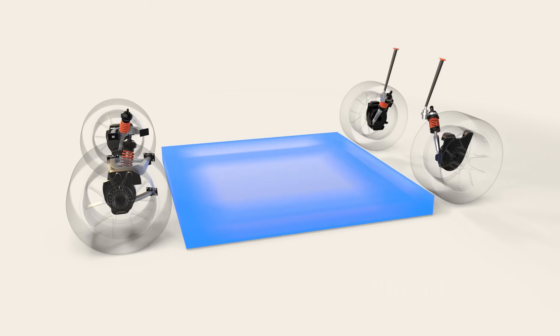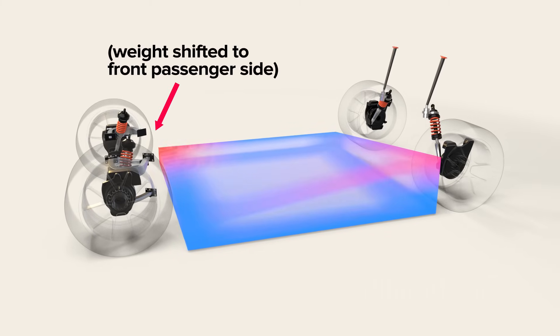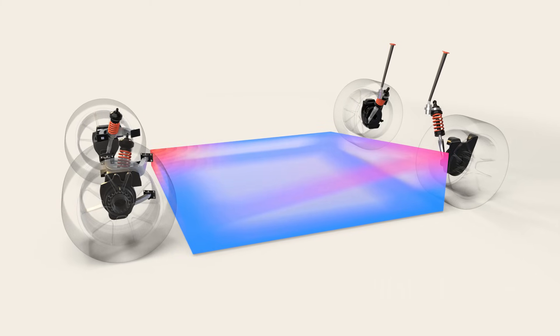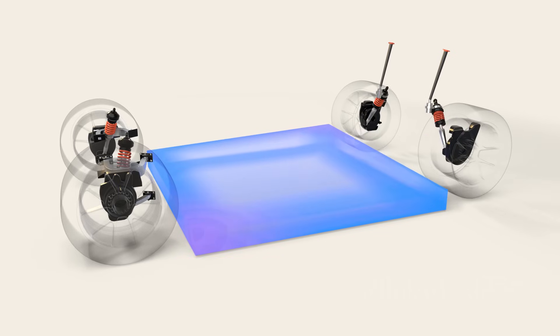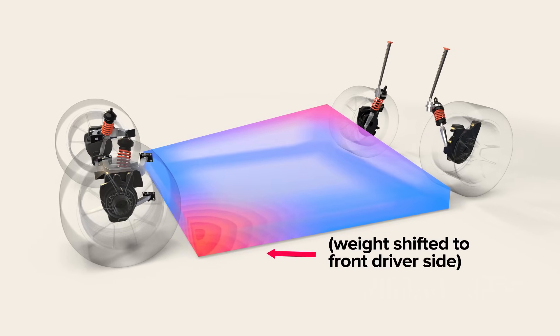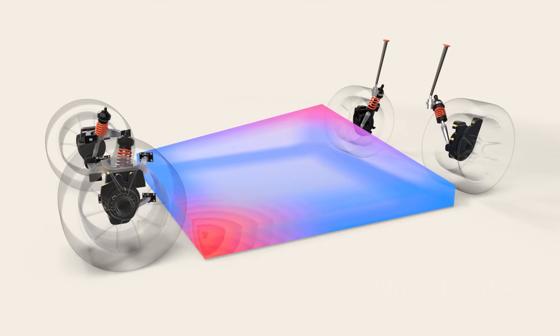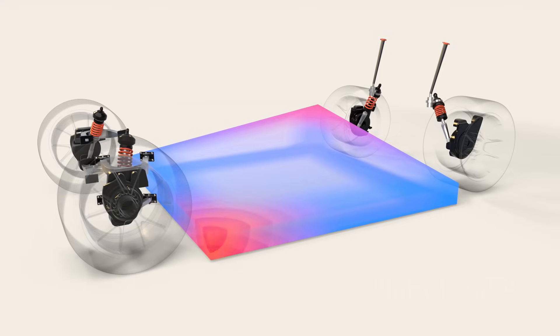Too much wedge angle, from the rear driver to front passenger, causes understeer, where the car doesn't turn easily enough and is said to be too tight. Too much wedge angle on the opposite side can cause oversteer, where the rear end breaks loose and the car may spin out of control.